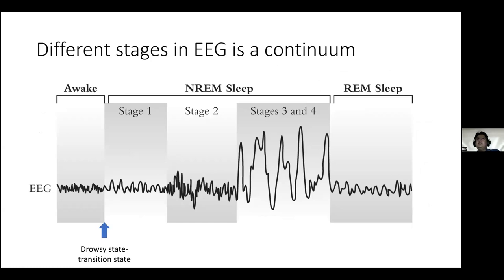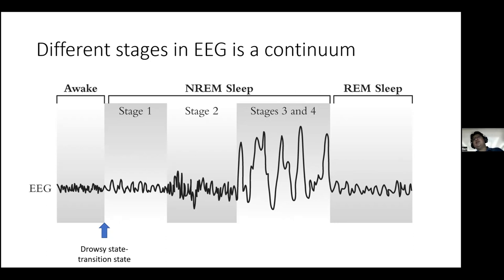There are different stages in EEG — it's a continuum. When I'm talking to you, you are in the awake state. If you find my presentation boring, you go into drowsy, and if you can't be aroused, from drowsy you go into sleep: stage one, stage two, stage three, and then REM sleep.